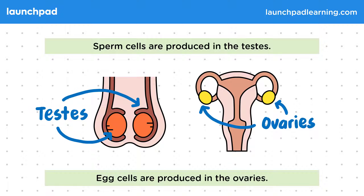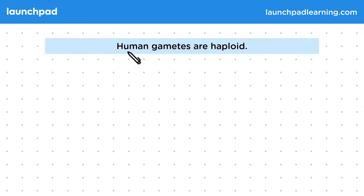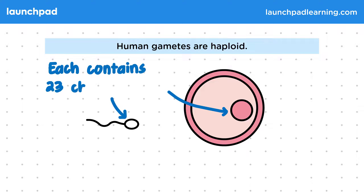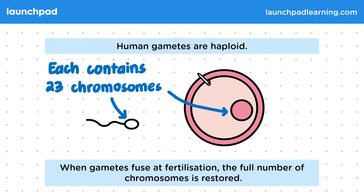So why are gametes important in sexual reproduction? Human gametes are haploid. Both of these gamete cells have a nucleus and each contains 23 chromosomes — this is half the number of chromosomes of a normal adult organism. When gametes fuse during fertilisation, the full number of chromosomes is restored.